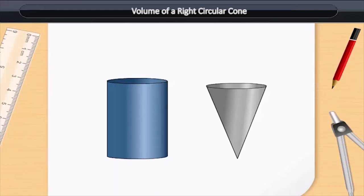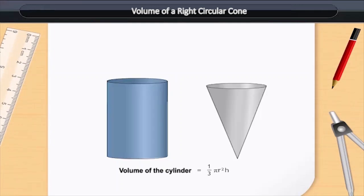Hence, three times the volume of a cone makes up the volume of a cylinder which has the same base radius and the same height as the cone. This means that the volume of the cone is one-third the volume of the cylinder.